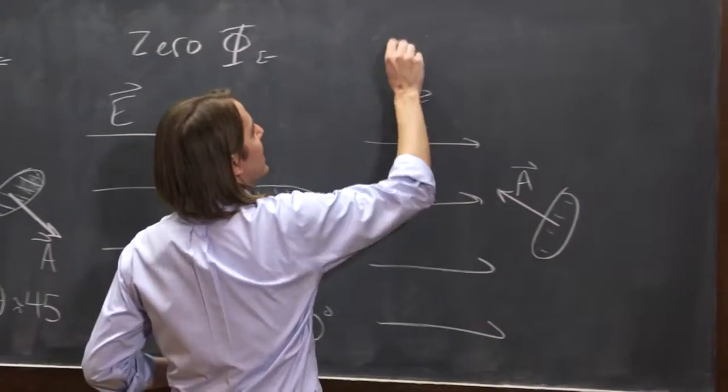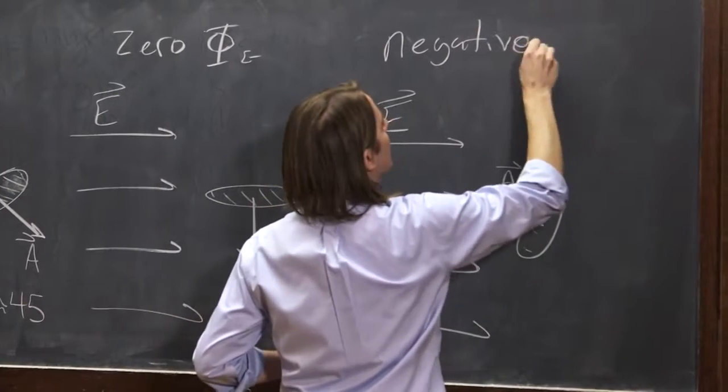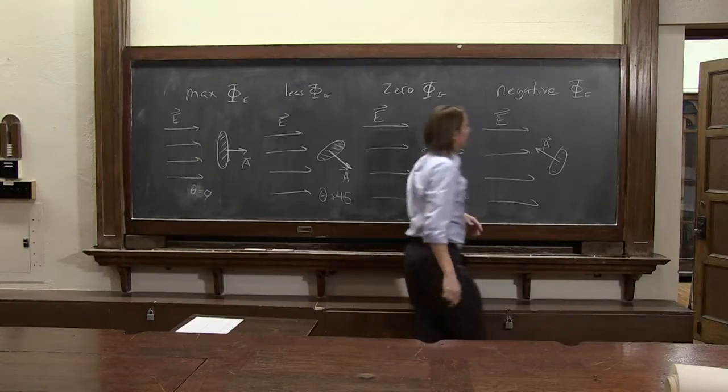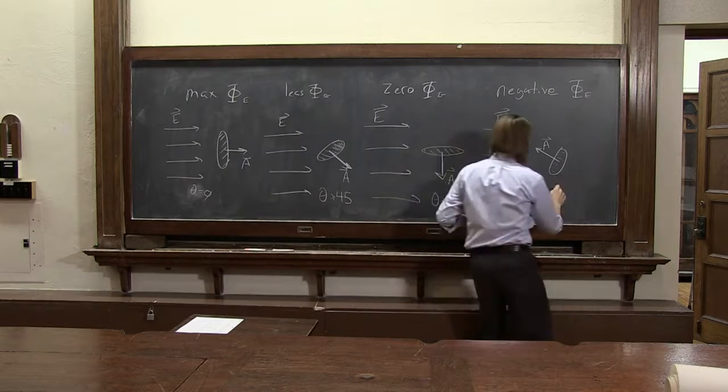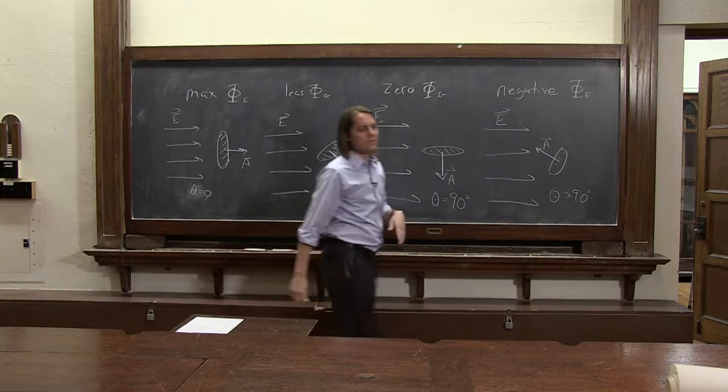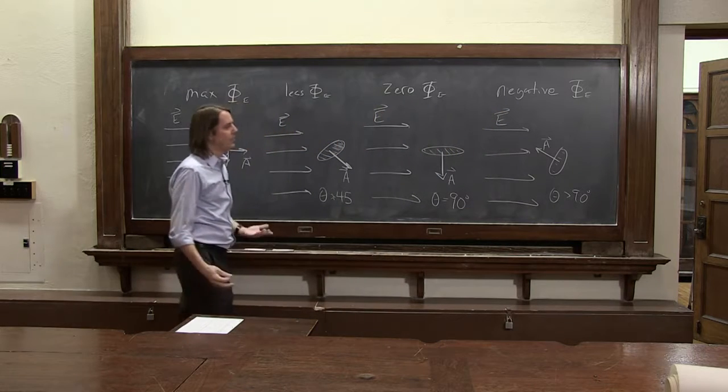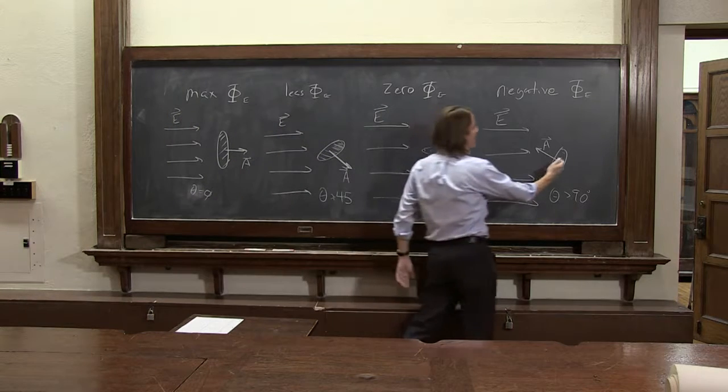All that really means is you get negative flux. If A is pointing towards E and you think about the angle in between, then theta is greater than 90 degrees. And if theta is greater than 90 degrees, the cosine will be negative. It can go all the way up to 180 and then it gets positive again, but you get the idea.